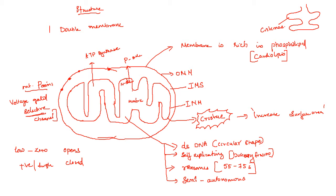The inner mitochondrial membrane is folded many times, and this folding is known as cristae. Don't confuse this term with cisternae in the Golgi apparatus — in the Golgi apparatus, the sack-like structures are called cisternae, whereas in mitochondria the folding is called cristae.